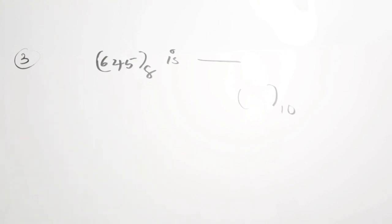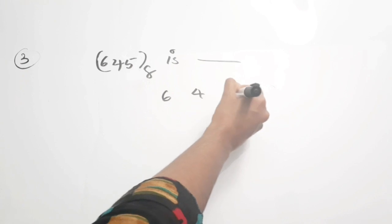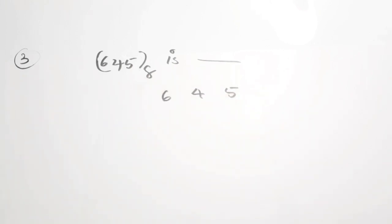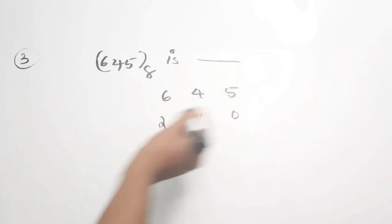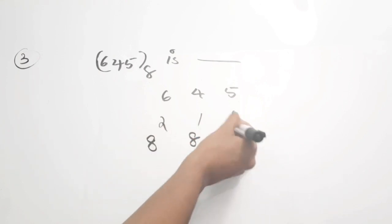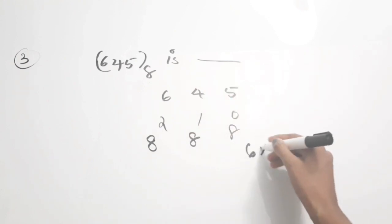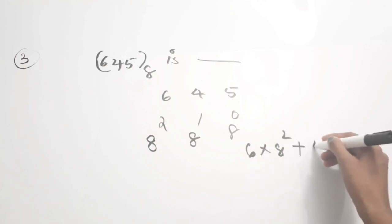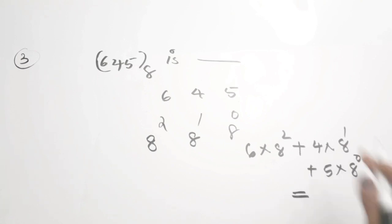We have to convert this number to decimal. Write the numbers 6, 4, and 5 — these are to the base of 8. Write the position values as 0, 1, and 2. Then take these as powers of 8: 8 raised to 0, 8 raised to 1, 8 raised to 2. Multiply with the corresponding numbers and take the sum: 6 × 8² + 4 × 8¹ + 5 × 8⁰. This equals your corresponding decimal representation. This is the procedure for octal and also for hexadecimal number conversion.